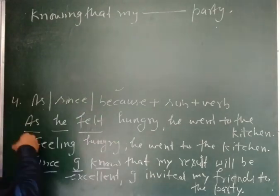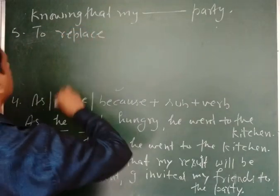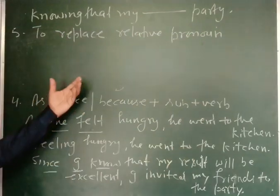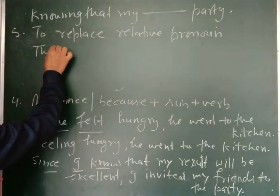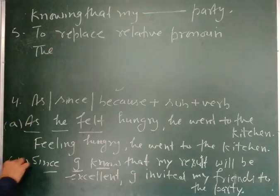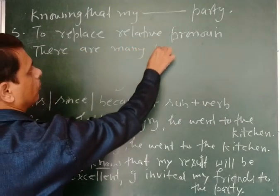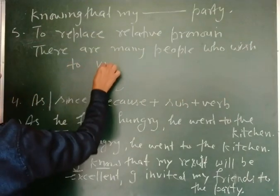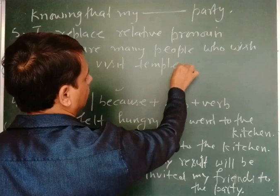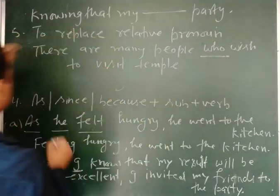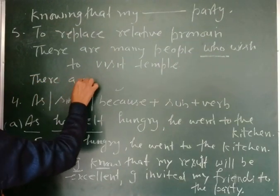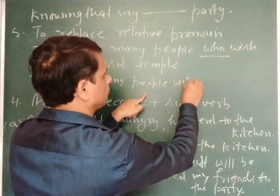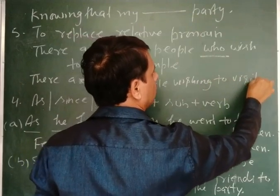Fifth use: to replace a relative pronoun. For example: 'There are many people who wish to visit the temple.' We replace the relative pronoun 'who' and use present participle: 'There are many people wishing to visit the temple.'